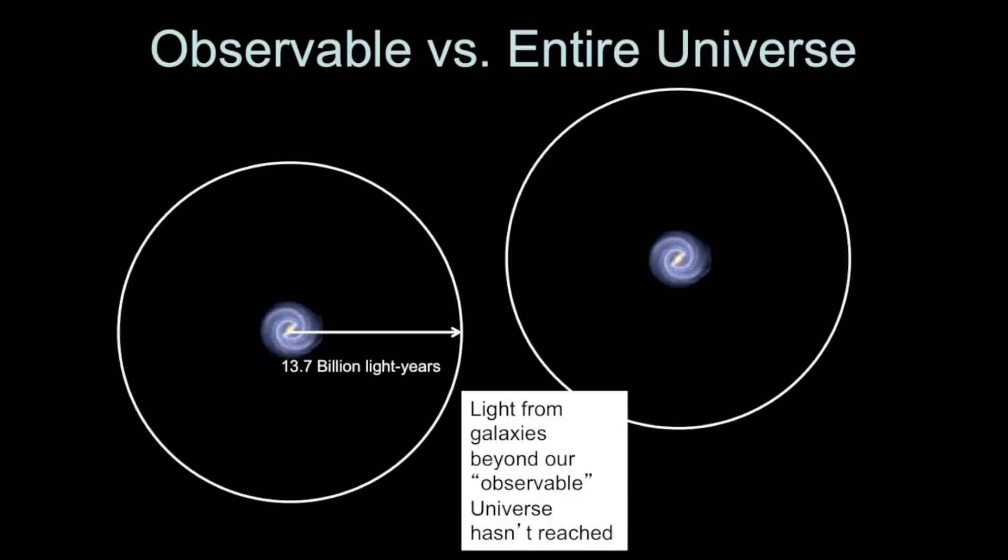A galaxy that exists just on the edge of our observable universe would have a radius of its own observable universe around it of also 13.7 billion years. And if you existed on the edge of the Milky Way's observable universe, you would also see galaxies all around you. You'd observe expansion. It wouldn't be the case that you would just see galaxies towards the Milky Way and then empty space on the other side. That doesn't make sense at all.